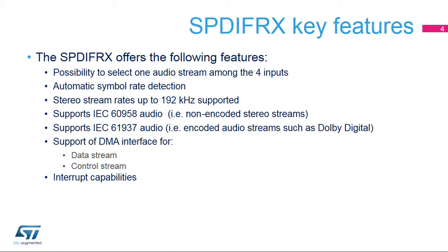The possibility to select one audio stream among the four inputs — note that only one stream can be decoded at a single time. Automatic symbol rate detection: if the SPDIF-CLK frequency is high enough, the SPDIF-RX will be able to decode the incoming stream and provide information about its estimated sampling rate. Stereo stream rates up to 192 kHz are supported.